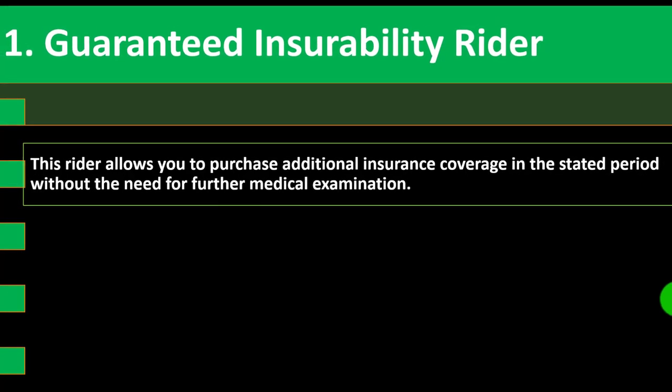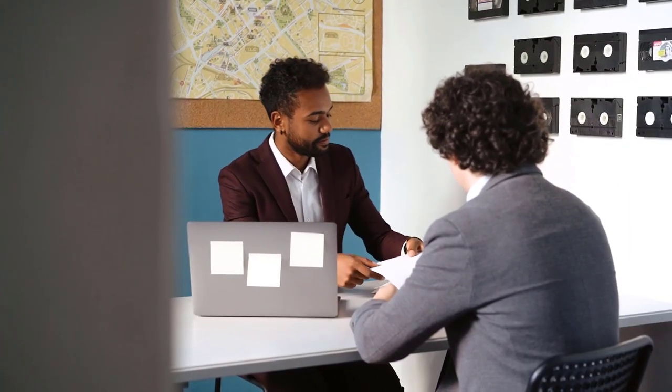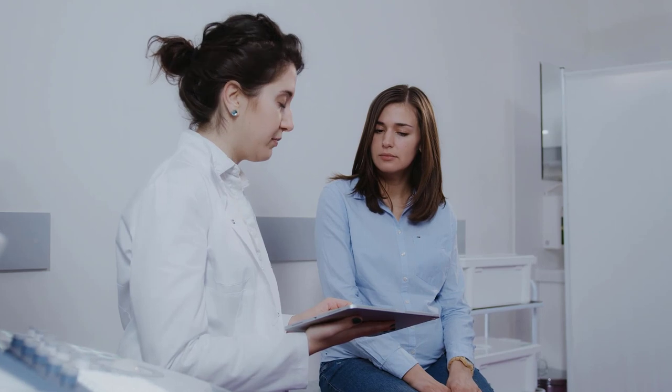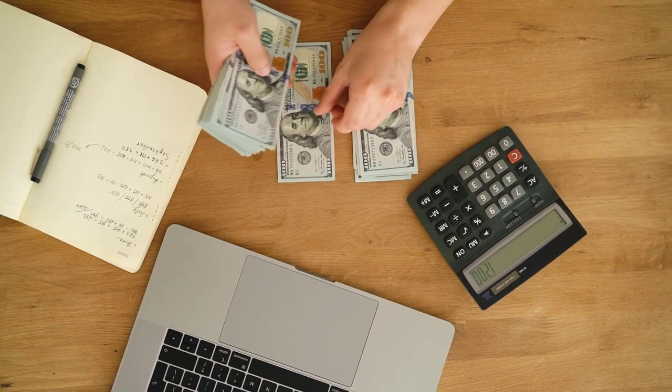Number one: the Guaranteed Insurability Rider. This rider allows you to purchase additional insurance coverage within a stated period without the need for further medical examination. If you have baseline coverage, at some future point you might want more coverage and can do so without the added medical examination — which can be a tedious and restrictive step if a medical condition has emerged that would increase premiums. A guaranteed insurability rider is most beneficial when there has been a significant change in your life circumstances, such as the birth of a child, marriage, or an increase in your income.